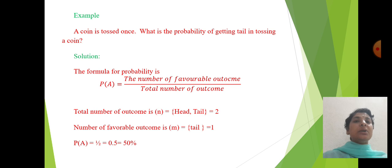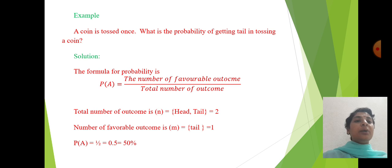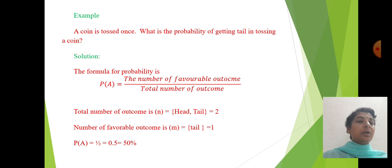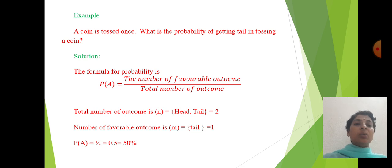Example: a coin is tossed once. What is the probability of getting a tail? Solution: the formula of probability is the number of favorable outcomes divided by the total number of outcomes. The total number of outcomes when tossing a coin is 2 (head and tail). The number of favorable outcomes for tail is 1. So, P(A) = 1/2 = 0.5.